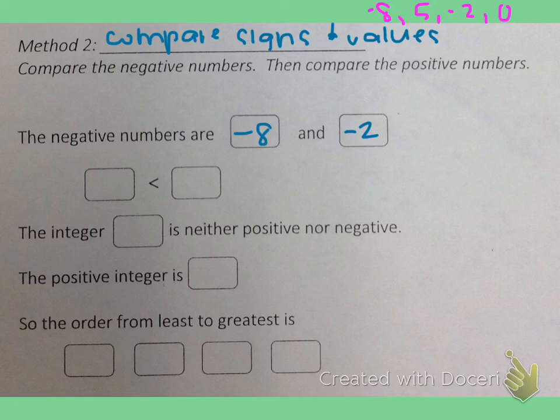Well we need to determine which one is greater. Negative 2 was farther to the right so that means it is greater. So that means negative 8 is less, negative 8 is less than negative 2. Then we have the integer that is neither positive nor negative. And the only integer that fits that description is 0. And then we have a positive integer which is 5.